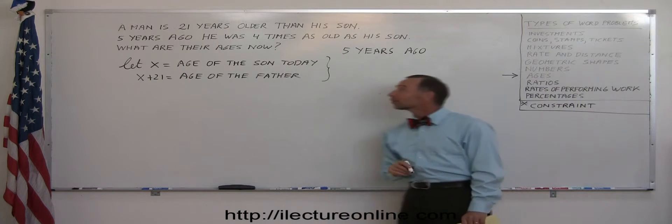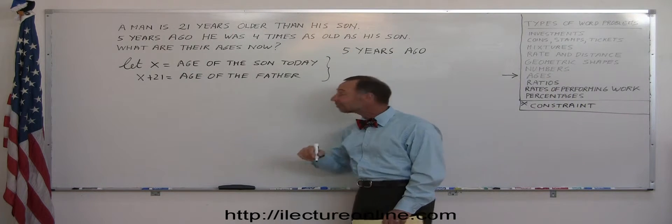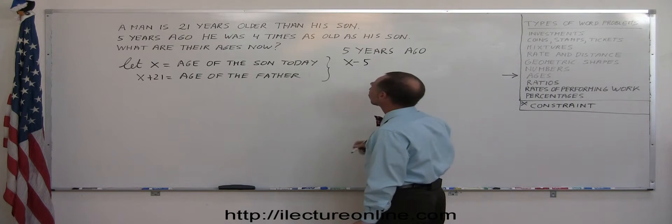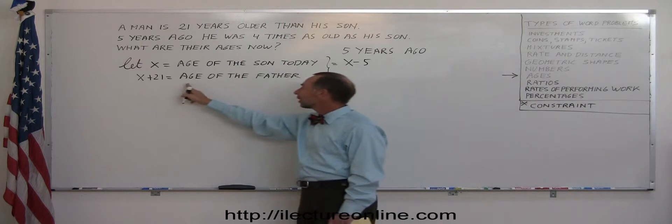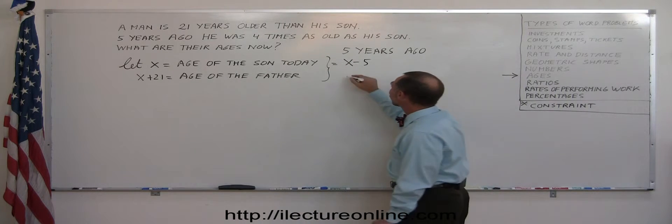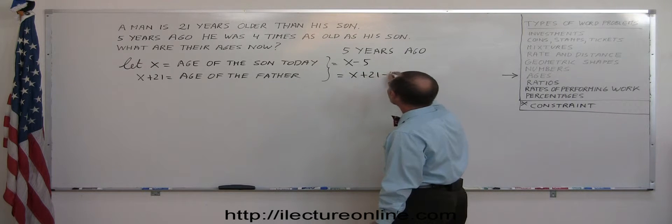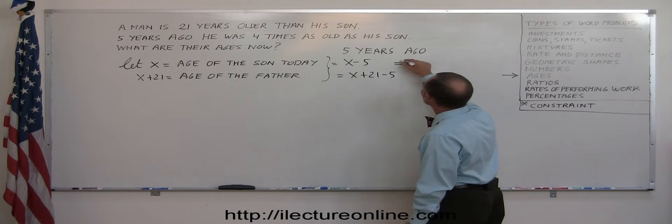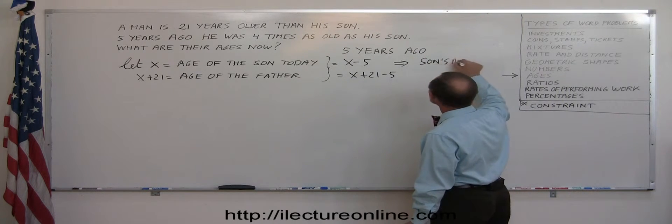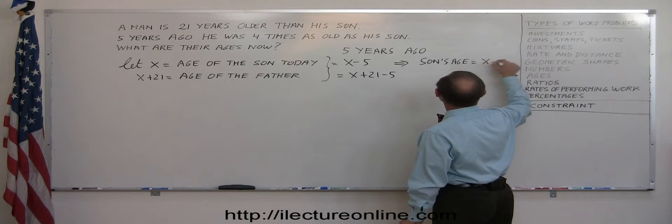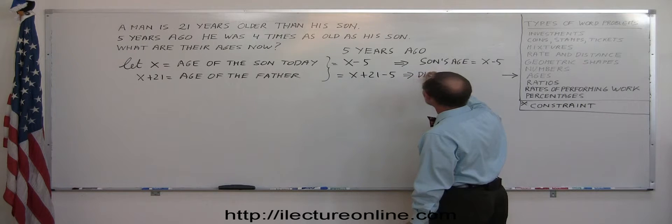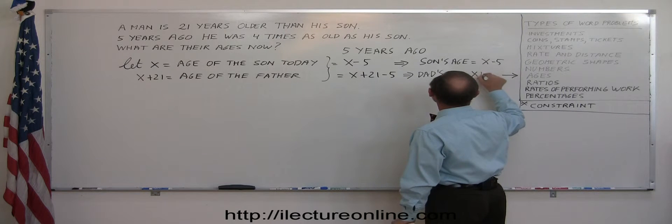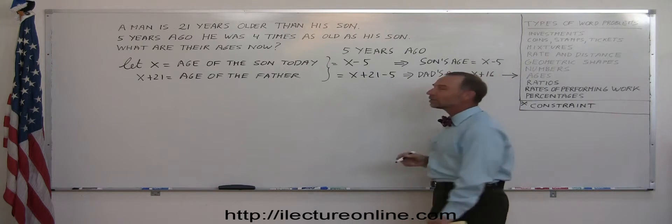Well, they were five years younger five years ago. So if x is the age of the son today, then x minus five is the age of the son five years ago. And for the father, x plus 21 is his current age. So x plus 21 minus five is the age five years ago. So for the son's age, that would be equal to x minus five. And for the dad's age, x plus 21 minus five or x plus 16. So those are the ages five years ago.